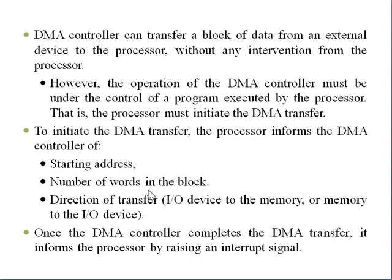To initiate a DMA transfer, the processor informs the DMA controller of three things: first, the starting address — that is, where in the block of data we want to start the transfer; second, the number of words in the block, for example 8, 16, or 32 words; and third, the direction of transfer — meaning whether data is being transferred from the IO device to memory, or from memory to the IO device.